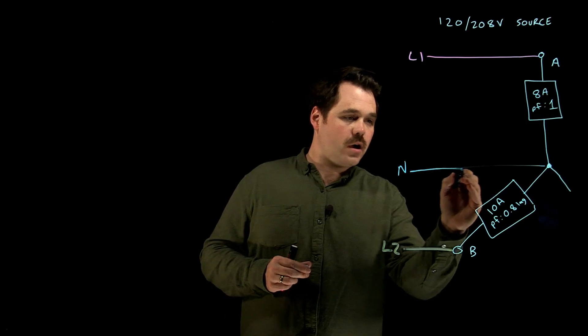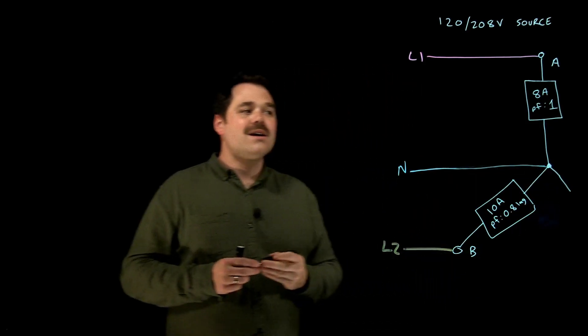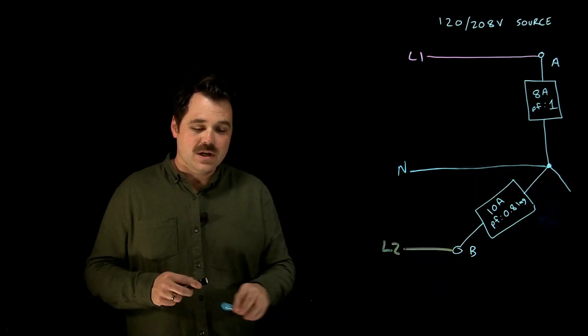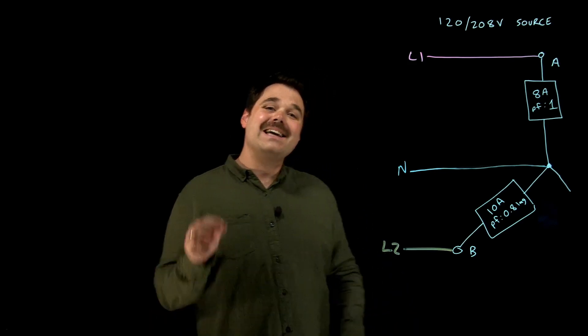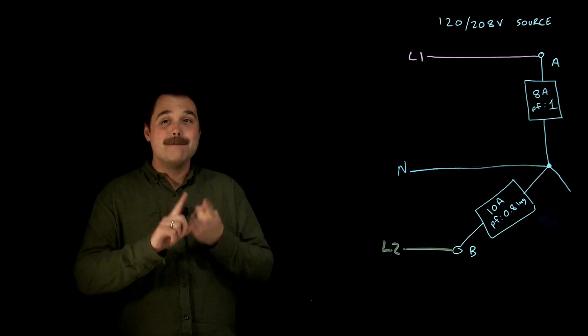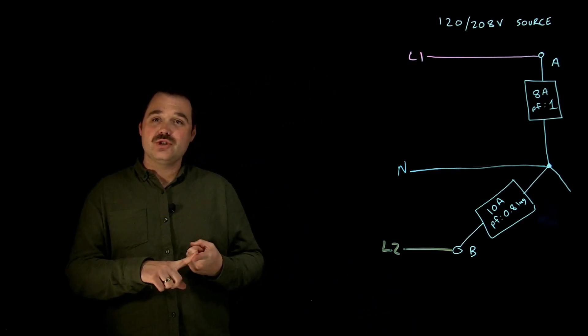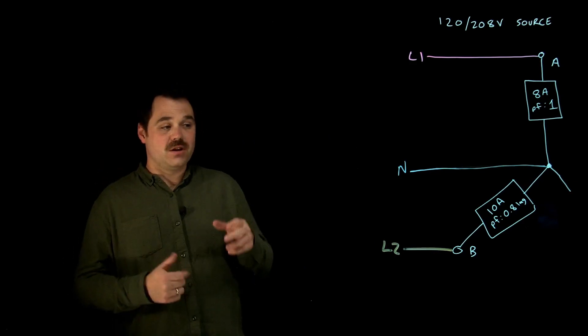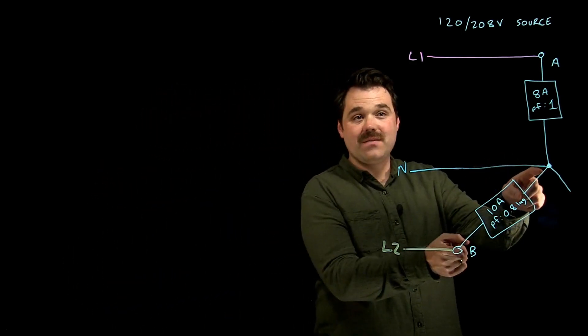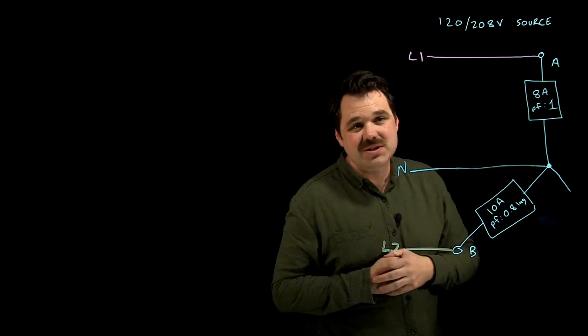Now a neutral conductor serves two purposes. A neutral conductor is there to maintain the phase voltages. So in this case, it's there to maintain 120 volts on phase B and 120 volts on phase A.